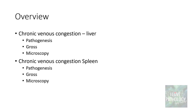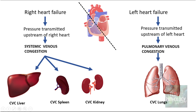We will be understanding the pathogenesis, the gross and microscopic features of both chronic venous congestion of liver and spleen. We looked into various causes of left heart failure which leads to pulmonary venous congestion and thereby chronic venous congestion of lung.